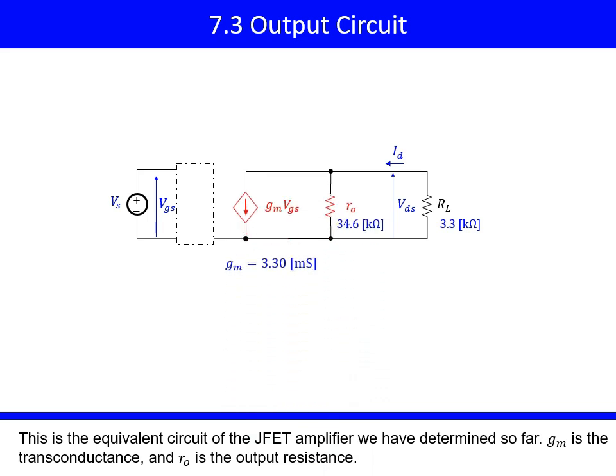This is the equivalent circuit of the JFET amplifier we have determined so far. GM is the transconductance, and RO is the output resistance.